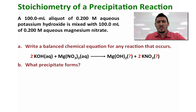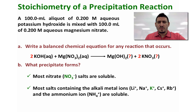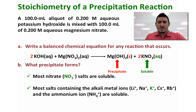The next question is: what precipitate forms? To answer this, we need to remember the solubility rules. The first rule says most nitrate salts are soluble. The second rule says most salts containing alkali metal ions — such as lithium, sodium, potassium, cesium, and rubidium — and the ammonium ion are soluble. So potassium nitrate is soluble since it contains potassium and nitrate. Therefore the precipitate is magnesium hydroxide. I can now finish the chemical equation by adding the solid state for Mg(OH)₂ and aqueous for KNO₃.